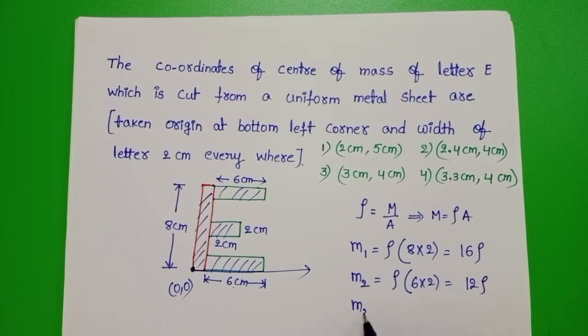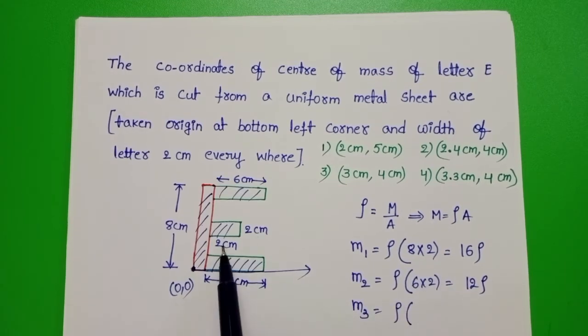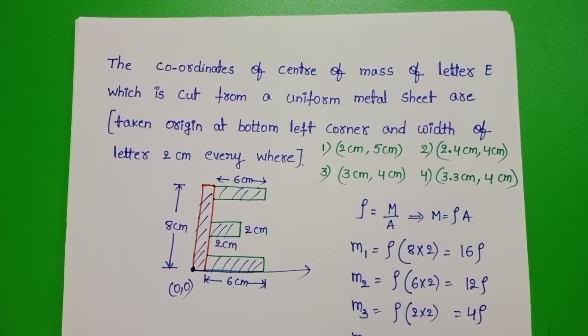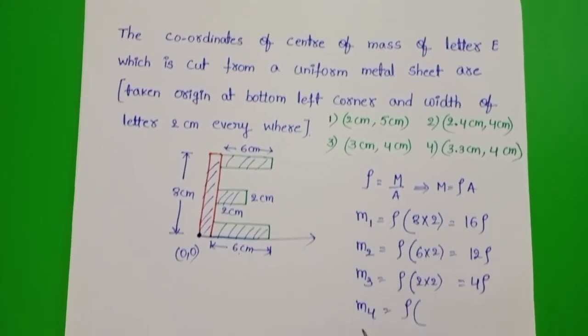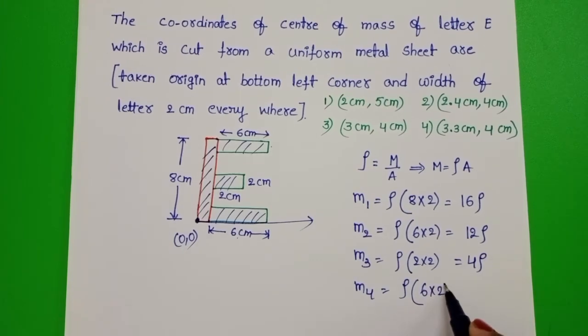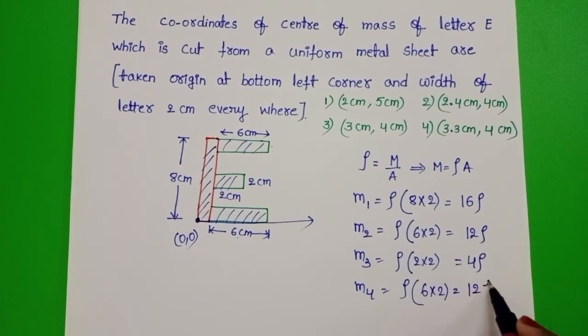And third part M3 equals rho into 2 into 2, which is 4 rho. M4 equals rho into 6 into 2, which is 12 rho.